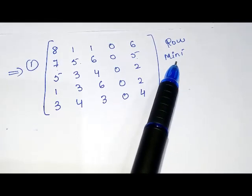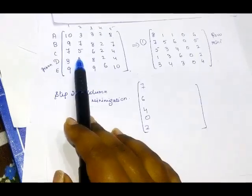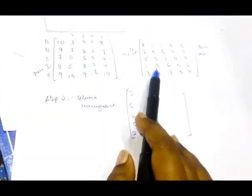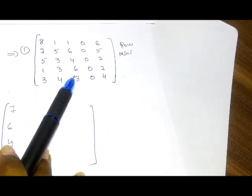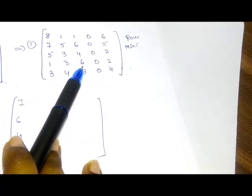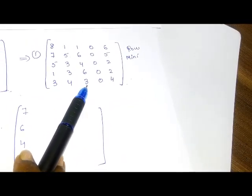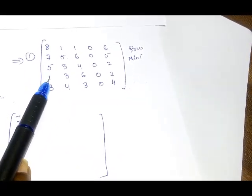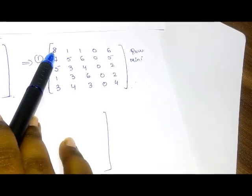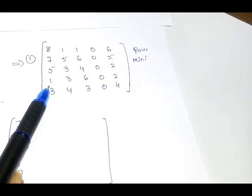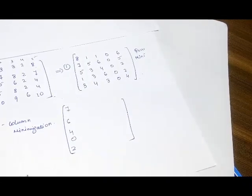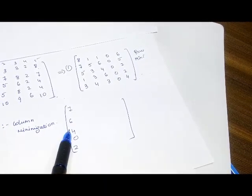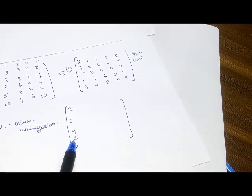Now let's move to the second step: column minimization. We performed row minimization on the initial matrix and obtained a new matrix. Column minimization is now performed on that matrix. In the first column, we choose the least element and subtract it from every other element in that column. The least element is 1. So: 8 minus 1 is 7, 7 minus 1 is 6, 5 minus 1 is 4, 1 minus 1 is 0, and 3 minus 1 is 2.